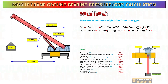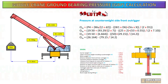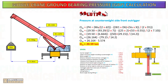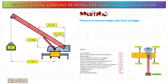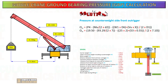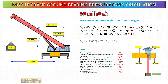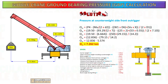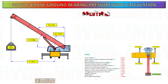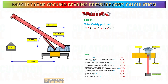Next, start to calculate the rear outrigger pressure at the counterweight side of the mobile crane as shown. To check the result, the total pressure must equal the total weight of the crane plus the load. To verify this, add the outrigger results for front and rear, boom and counterweight side.